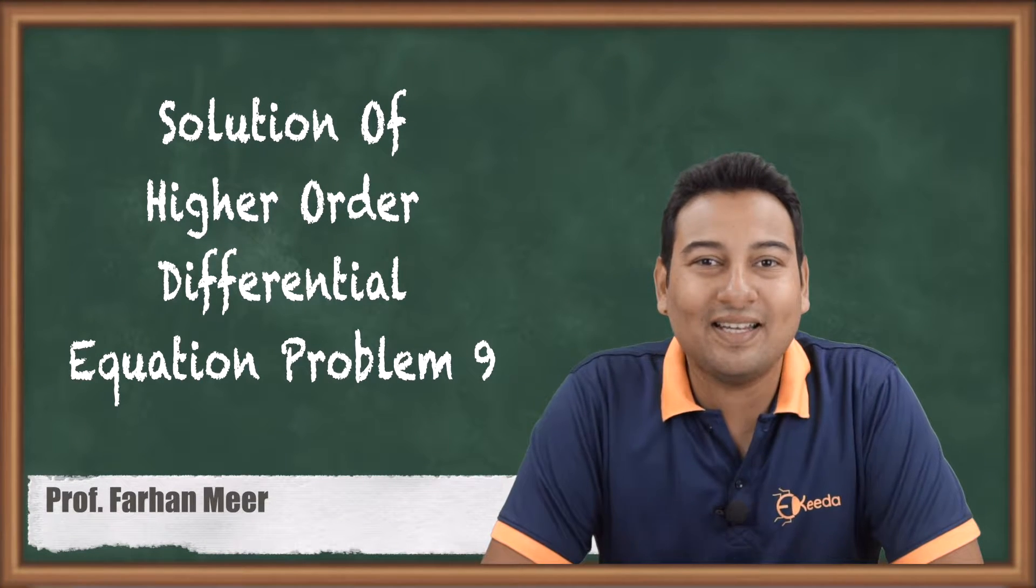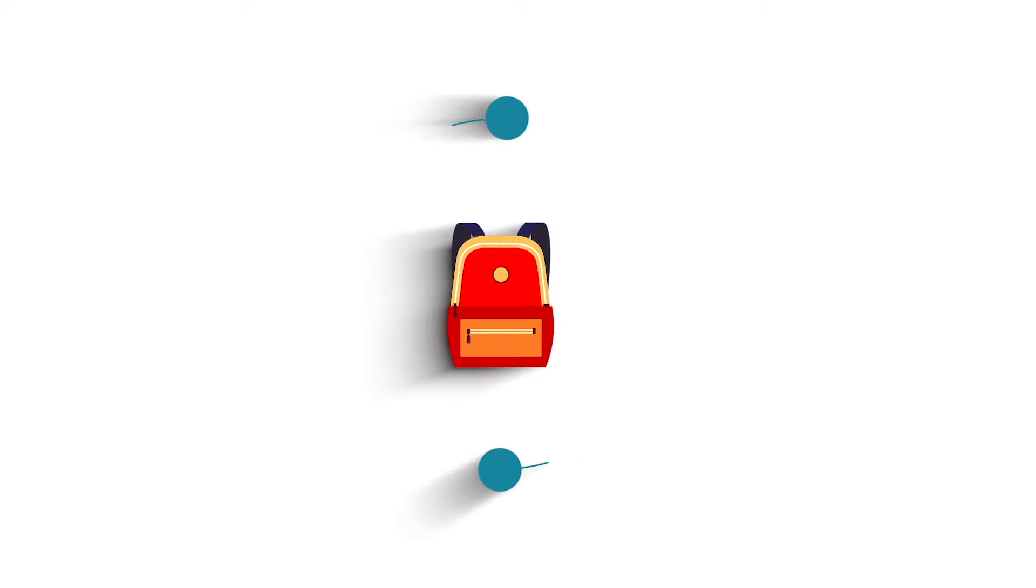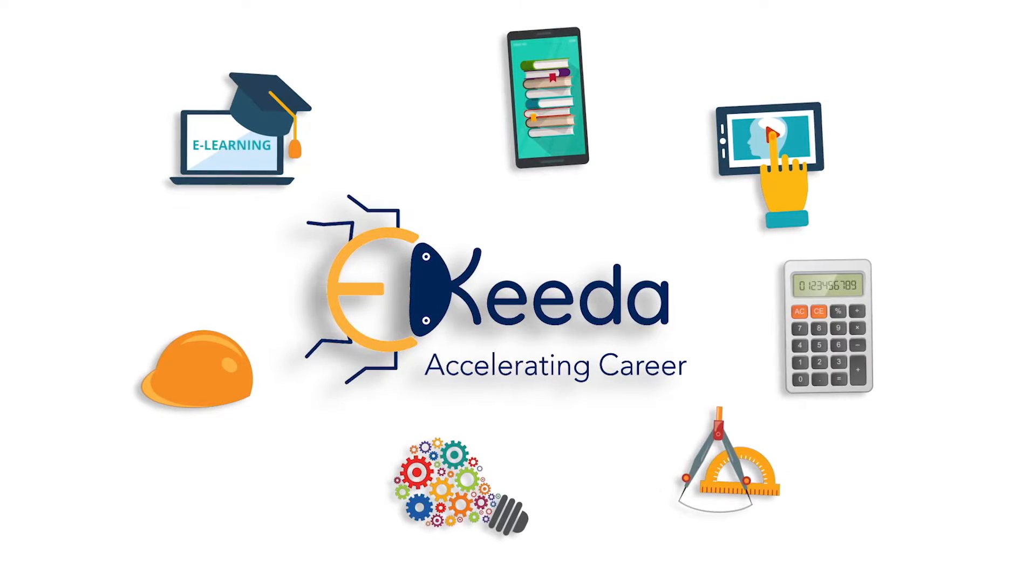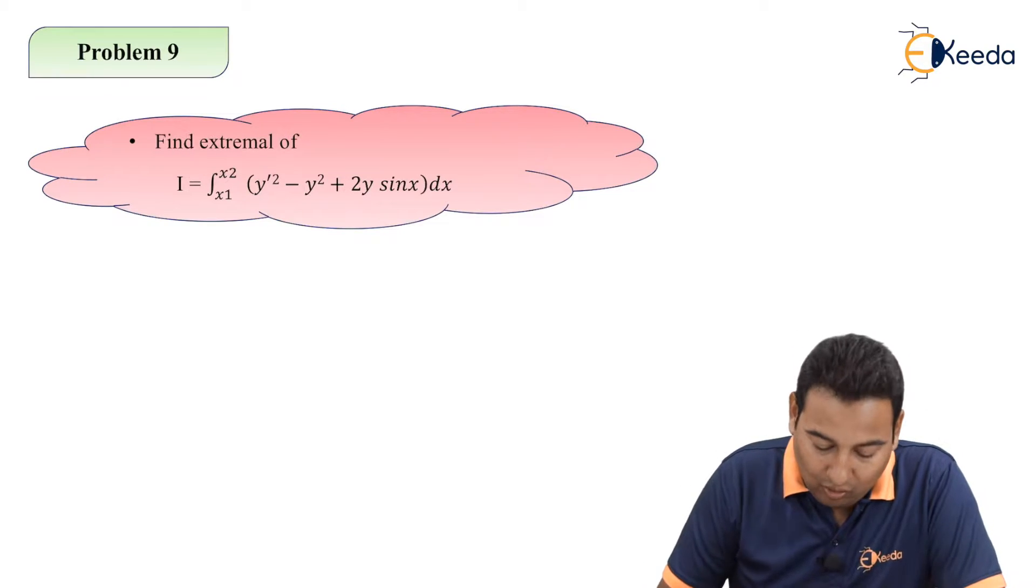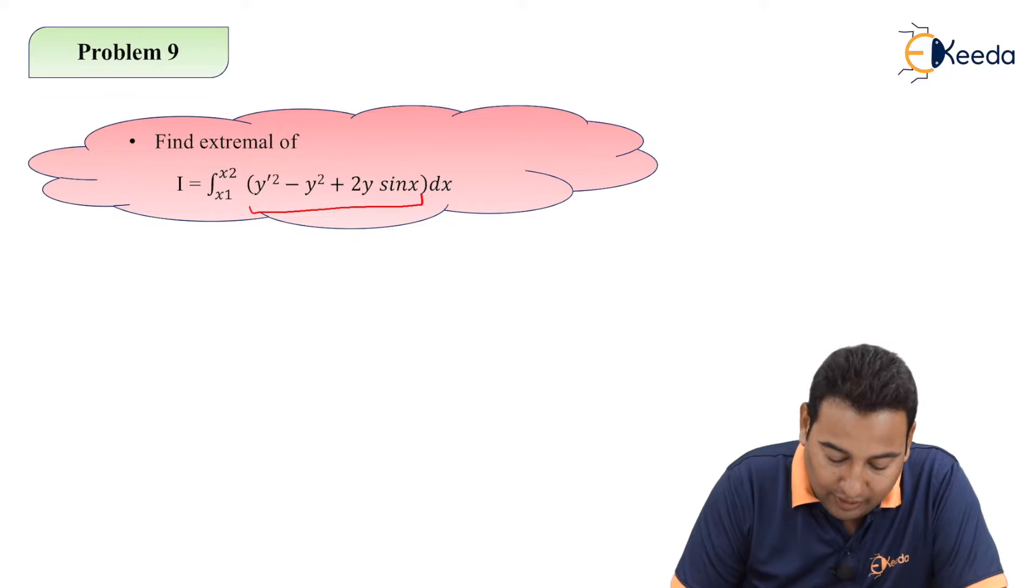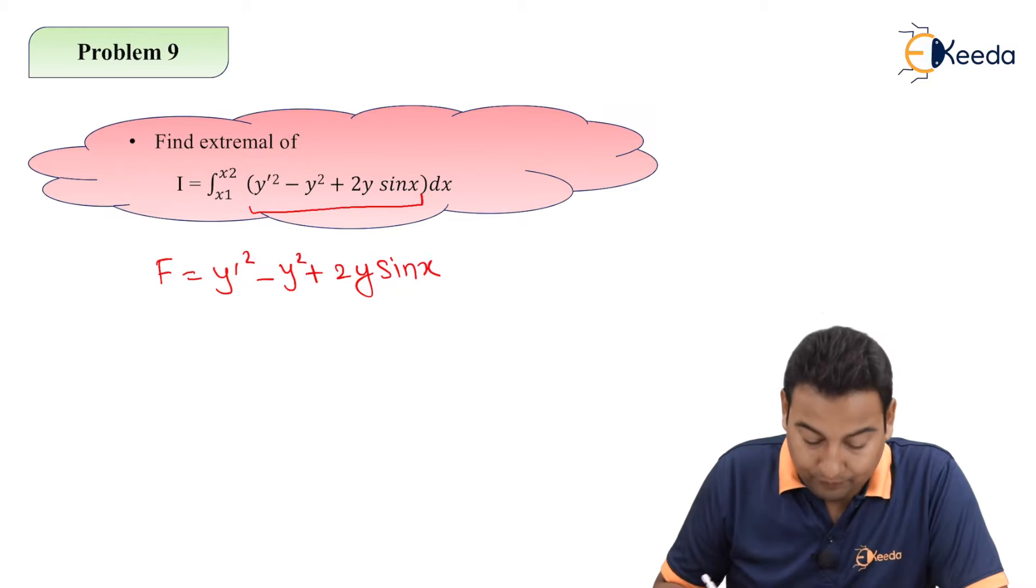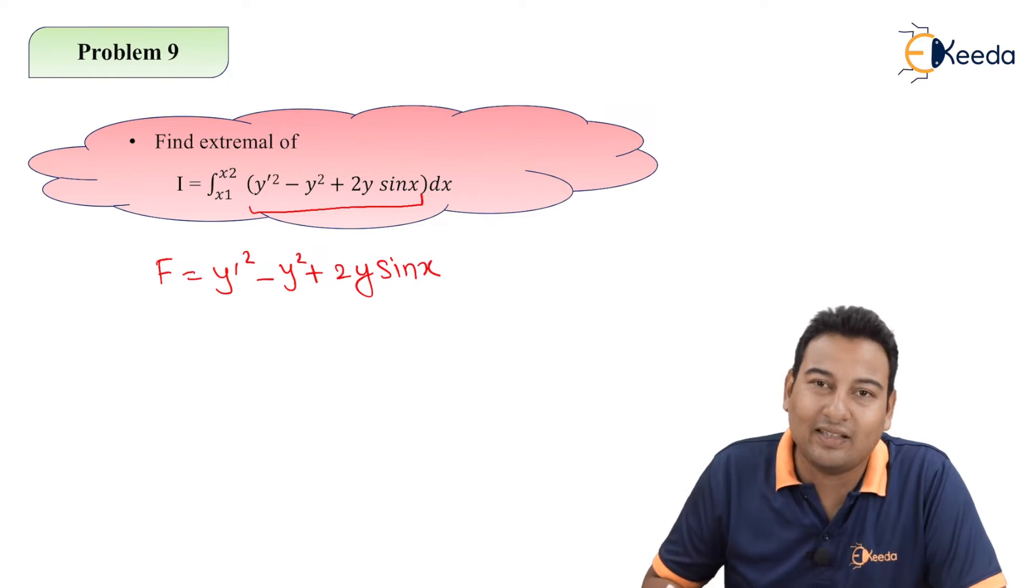Hello friends, in this video we will be discussing calculus of variation type number 1, problem number 9. Welcome back friends, let's have a look on the given problem. Here we need to find the extremal of this functional: y dash square minus y square plus 2y sin x. If you observe this functional, you will find there is x, y and y dash. All the three variables are there in the problem.